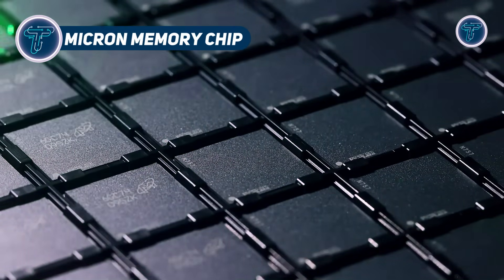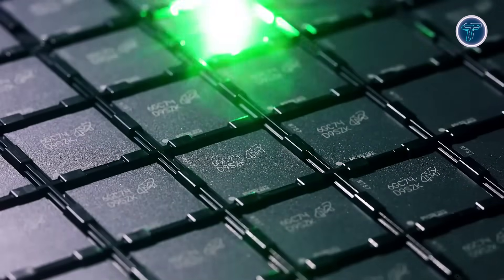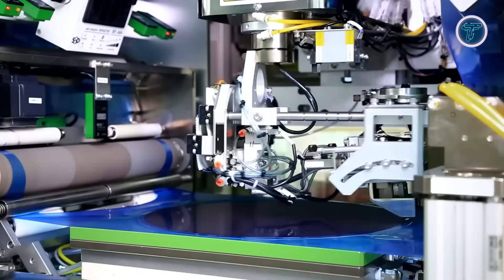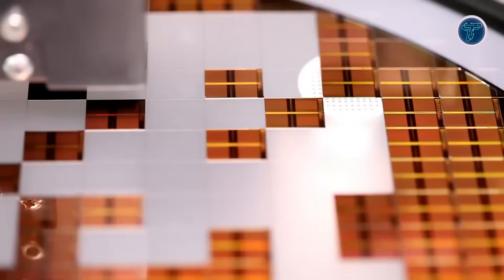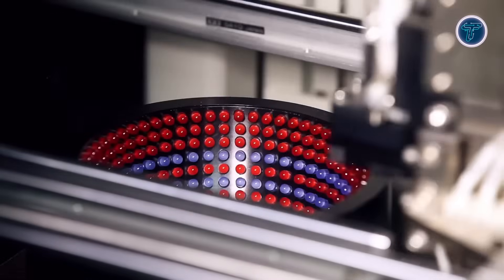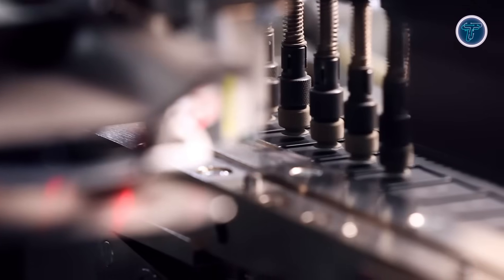Micron Memory Chip. Micron's memory chip technology powers a wide range of digital systems, from smartphones to AI data centers, using advanced memory architectures designed for speed, density, and energy efficiency. One core technology is DRAM, particularly DDR5, which enables high-speed data transfer with reduced power consumption and built-in error correction, making it ideal for demanding computing environments.